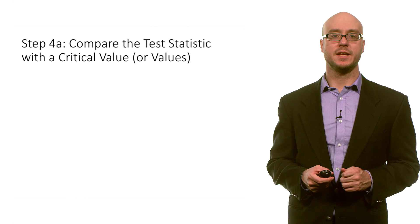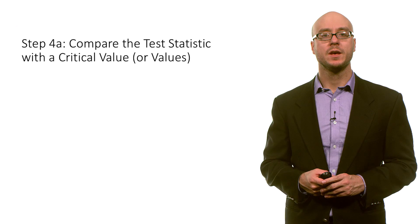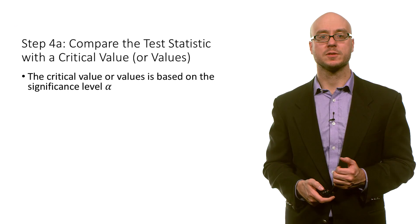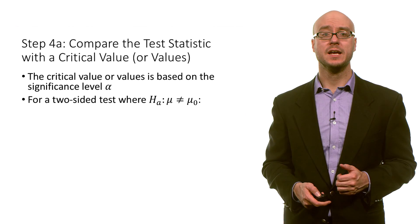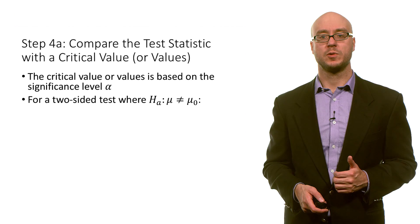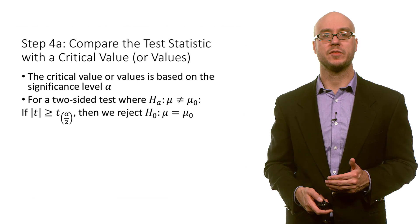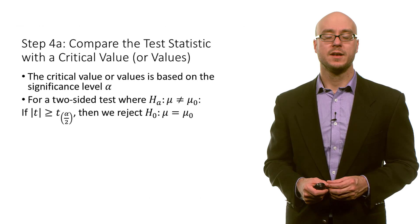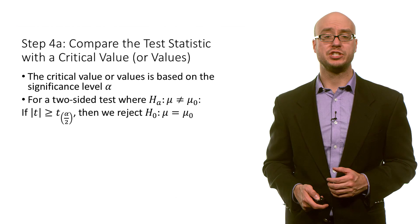After we've calculated the t-test statistic, or computed it from software, we want to compare the test statistic with a critical value or set of values. The critical value is going to be based on whatever we set alpha to. For a two-sided test, where the alternative is that the population mean does not equal the claimed value of the null, if the absolute value of our test statistic is greater than our value of t-alpha divided by 2, then we're going to reject the null.